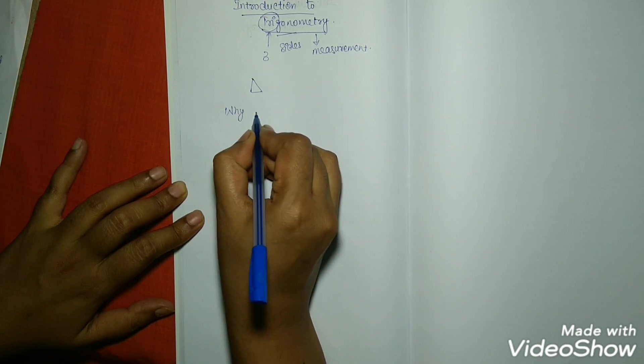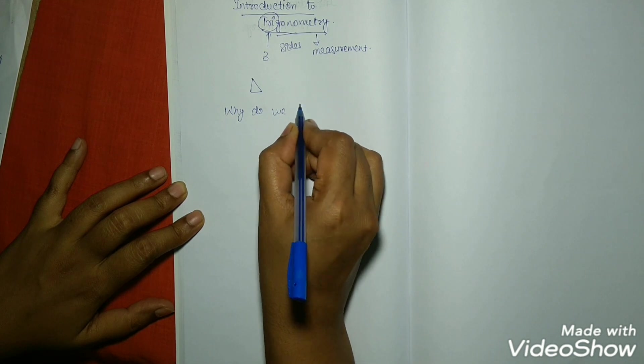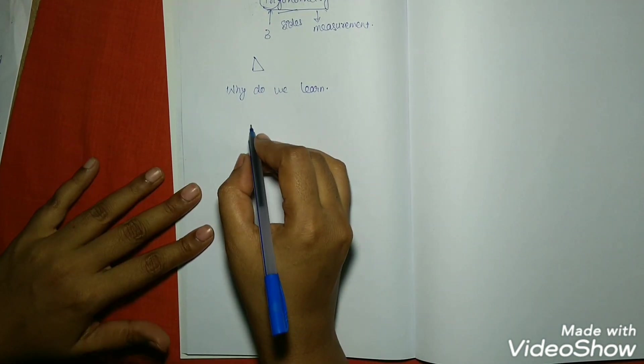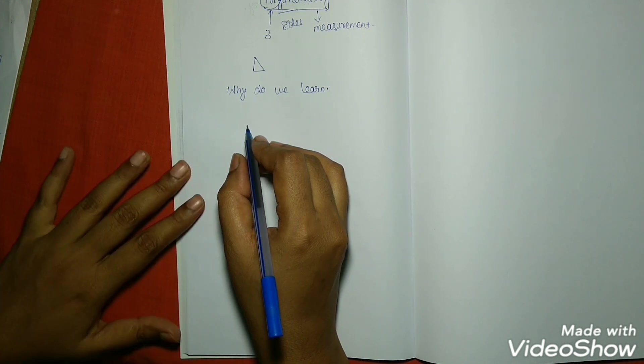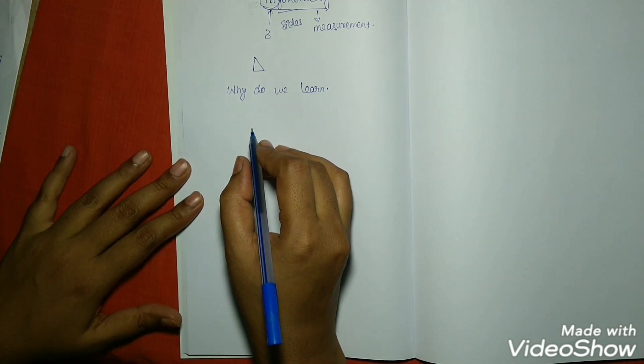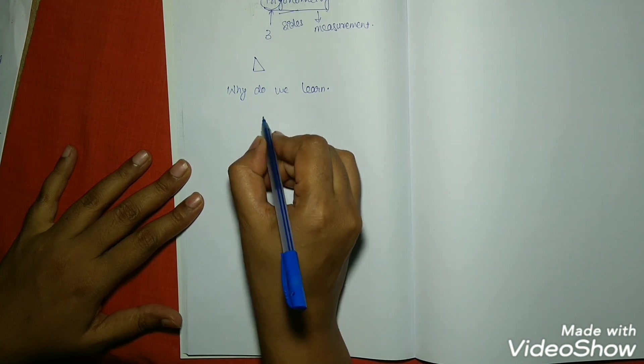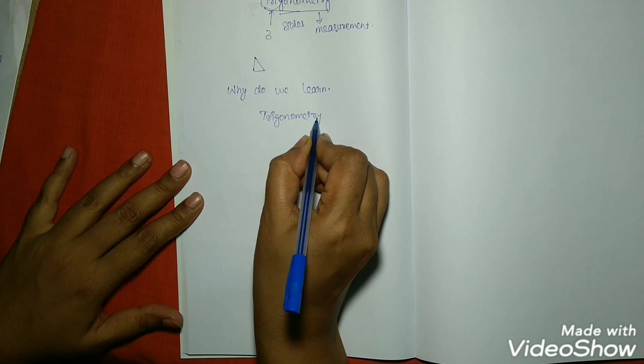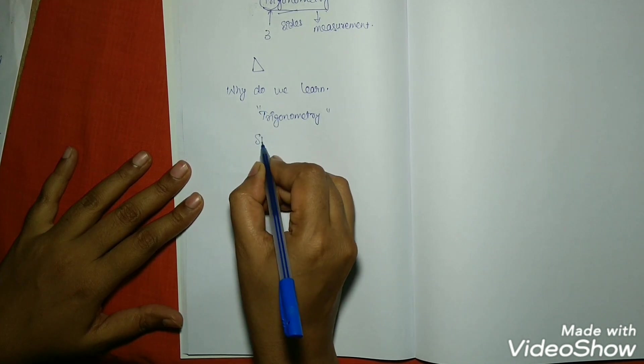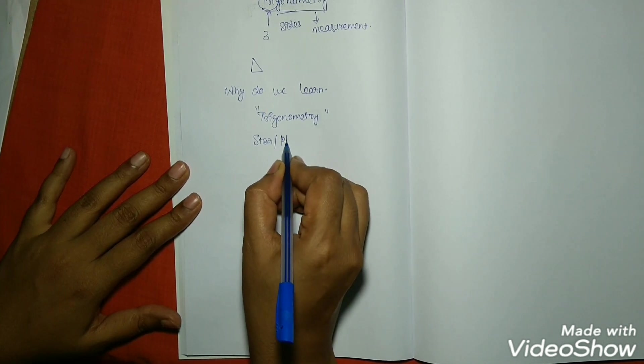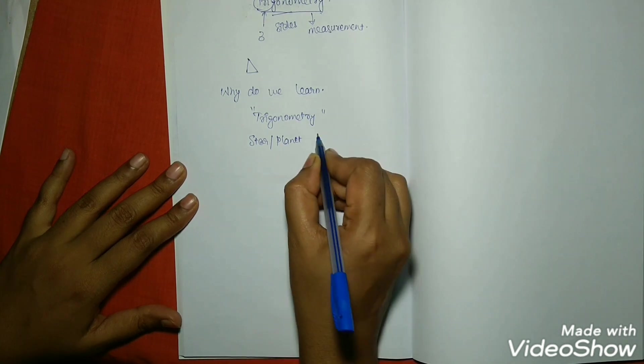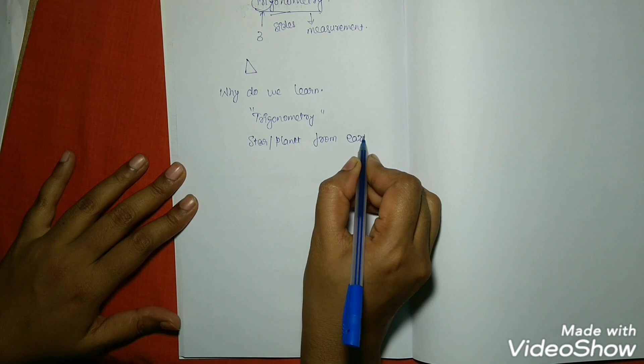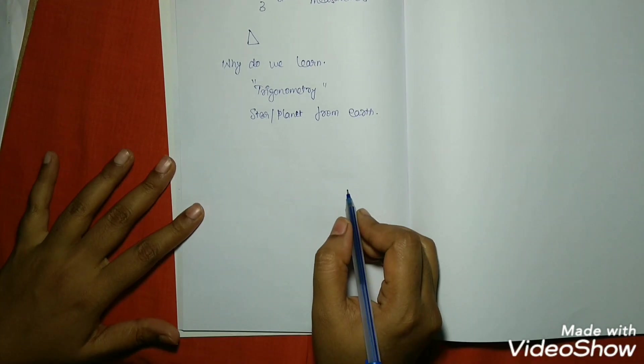Why do we learn trigonometry? In earlier days, astronomers used to find the distances of stars and planets from Earth using this trigonometry. To locate the star or planet from Earth, they used trigonometry.